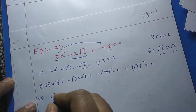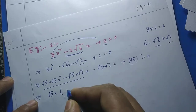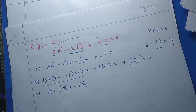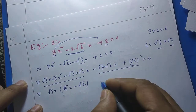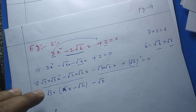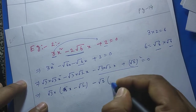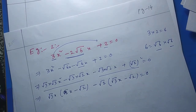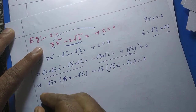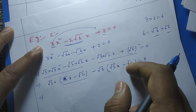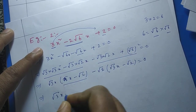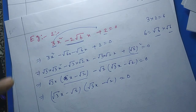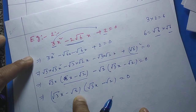Now taking √3 x common from the first two terms we get the factor (√3 x − √2). Similarly taking −√2 common from the last two terms, we bring out the same factor (√3 x − √2). We have got two identical factors, which means we are going in the correct direction. Taking (√3 x − √2) common from the whole expression, it becomes (√3 x − √2)² = 0.